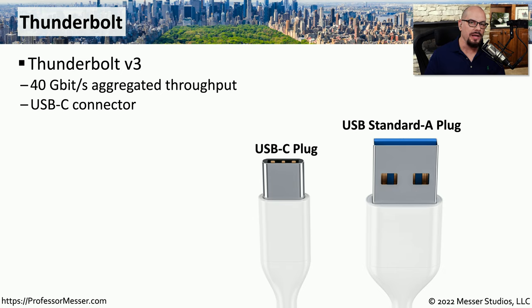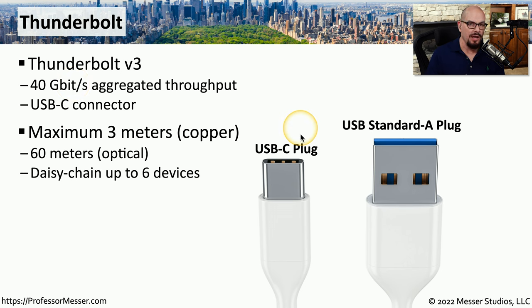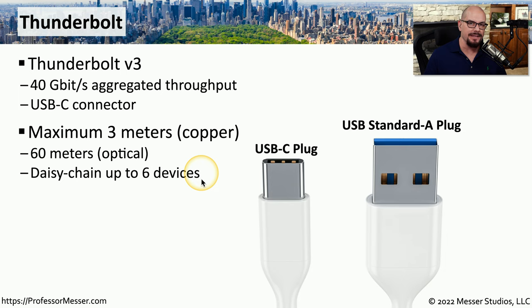With Thunderbolt version 3, we take advantage of the USB-C connector and send Thunderbolt signals over that USB-C cable, providing a total aggregated throughput of 40 gigabits per second. Thunderbolt signals can be sent over copper or fiber connections. Copper has a maximum cable length of three meters, while an optical or fiber connection supports up to 60 meters. You can also daisy chain six different devices together, extending a single Thunderbolt interface to multiple peripherals by connecting additional cables between them.